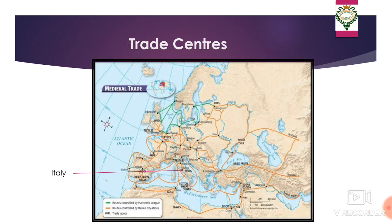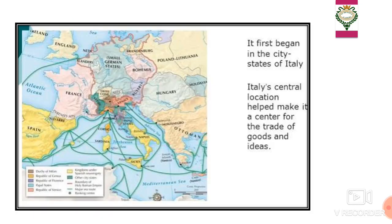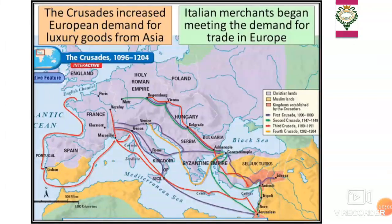From the time of the Crusades there was an intimate contact between the countries of the east and Europe, which led to the spread of trade and commerce in European countries. Commodities imported from eastern countries flooded the European market. The geographical location of Italy favored the growth of several prosperous trade centers. Italy was centrally located, which helped make it the center for the trade of goods and ideas. Following the Crusades, many important trade centers grew in Europe, like Rome, which developed into an important trade center.